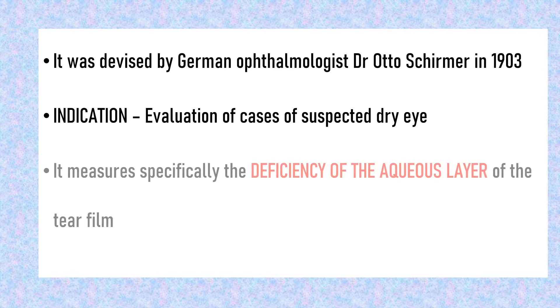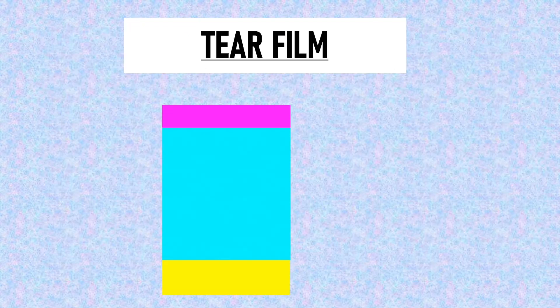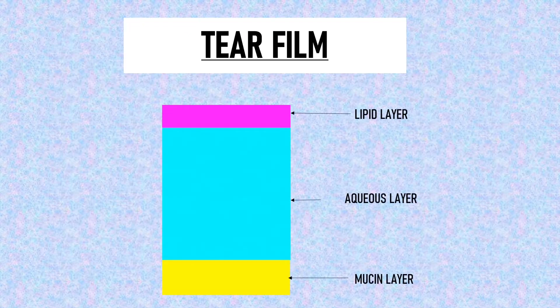It measures specifically the deficiency of the aqueous layer of the tear film. We know that the tear film has three layers: the lipid layer, the aqueous layer, and the innermost mucin layer. Schirmer's test is abnormal in diseases that affect the middle layer, or the aqueous layer, of the tear film.